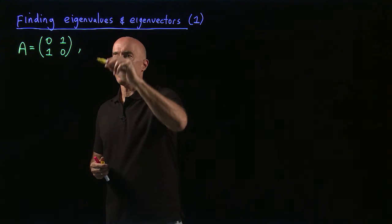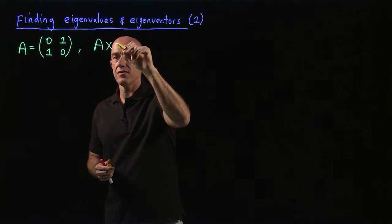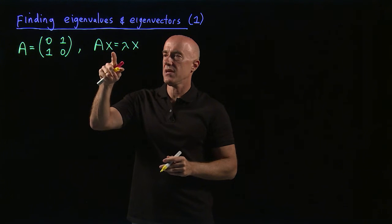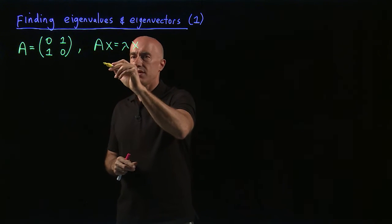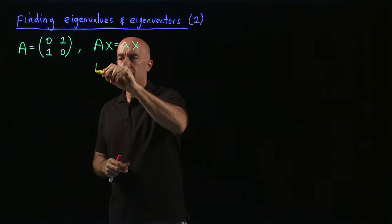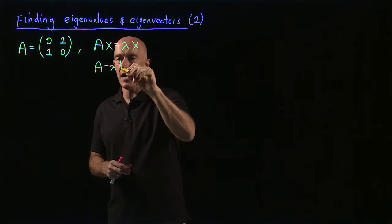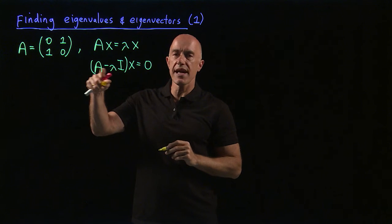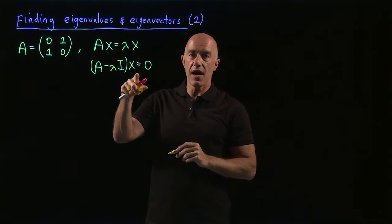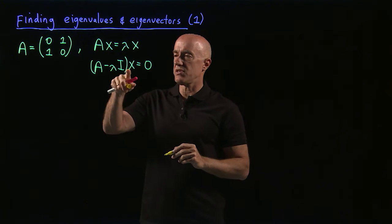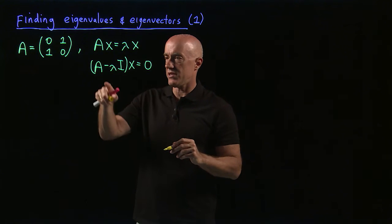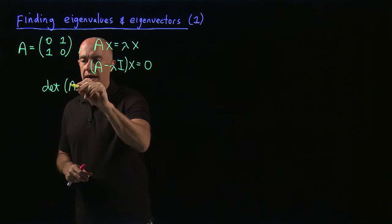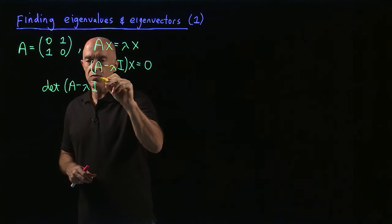We want to solve the eigenvalue problem, so we want to solve Ax equals λx for the eigenvalues λ and their associated eigenvectors x. This is the same equation — we introduce an I here — this is the equation A minus λI times x equals zero. And the equation we use to compute the eigenvalues is the characteristic equation: the determinant of A minus λI must be zero.